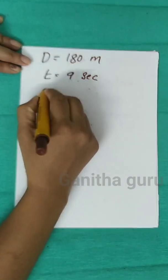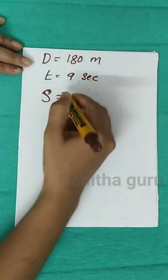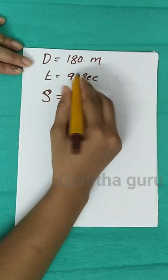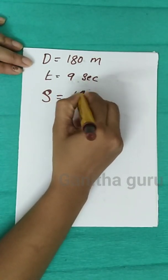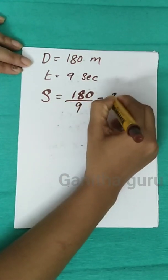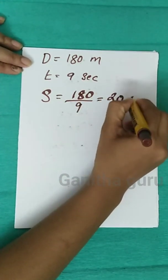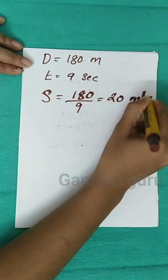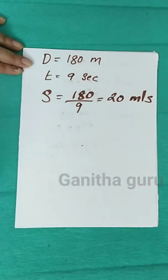Distance divided by time is 180 by 9, which is equal to 20 meters per second.